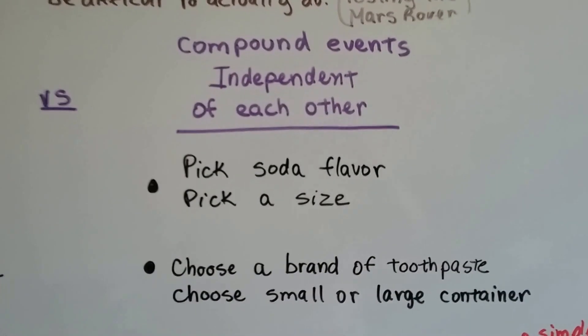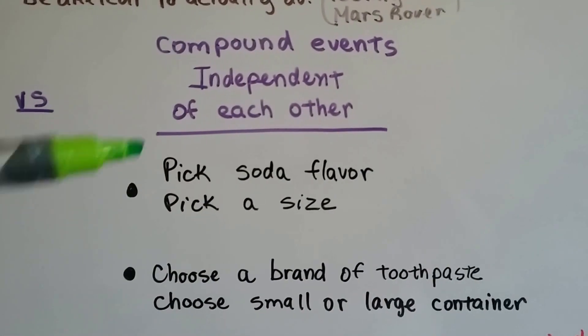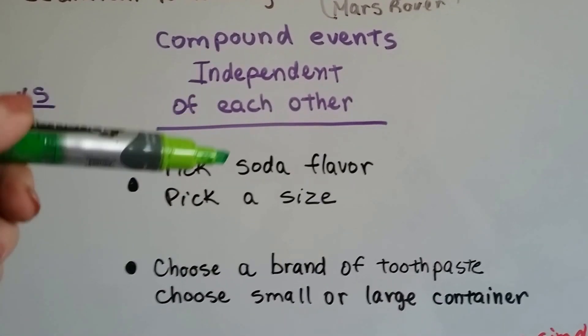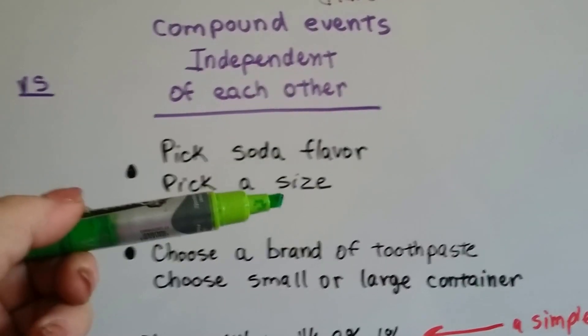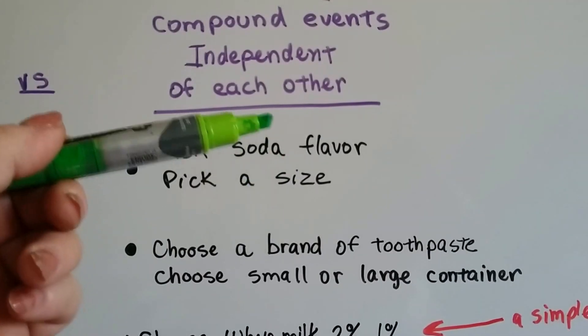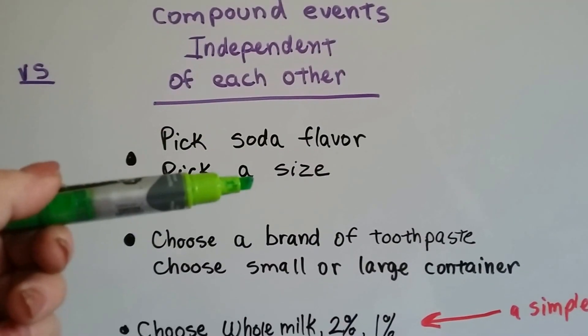An independent compound event is picking a soda flavor: cherry, strawberry, cola, and then picking a size: small, medium, and large. They don't depend on each other. They're independent. The flavor and the size have nothing to do with each other.